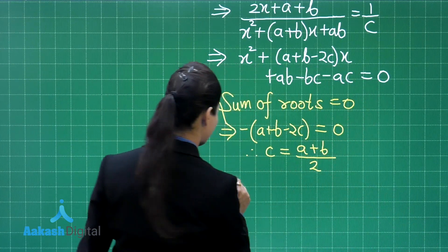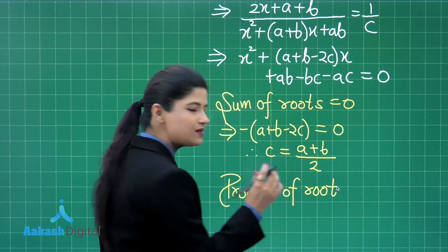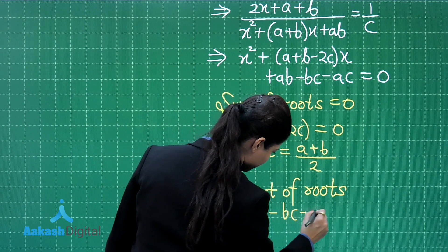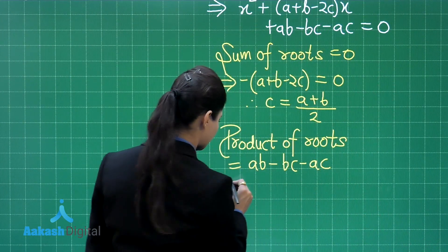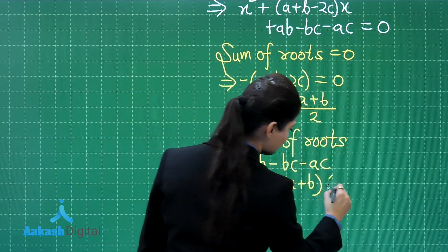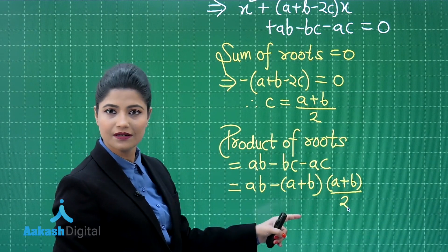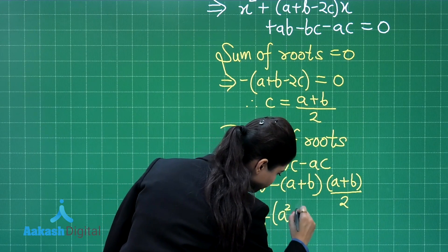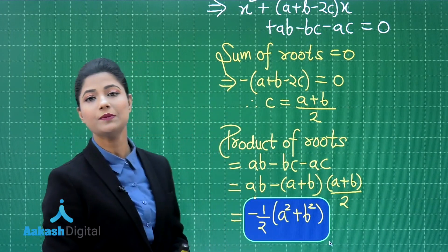Next, we obtain the product of roots using the formula c over a, which is the constant term upon the coefficient of x squared. The constant term is (ab minus bc minus ac). Taking c common gives c times (a plus b), and substituting c equals (a plus b) upon 2, we get (a plus b) squared upon 2, which simplifies to minus one-half times (a squared plus b squared).